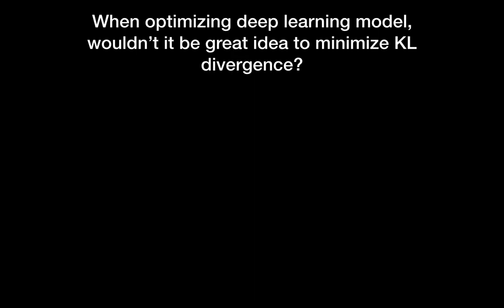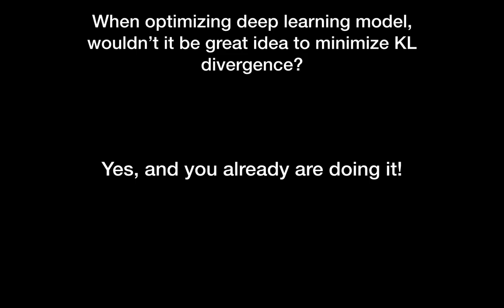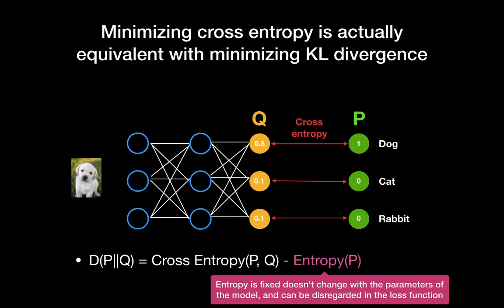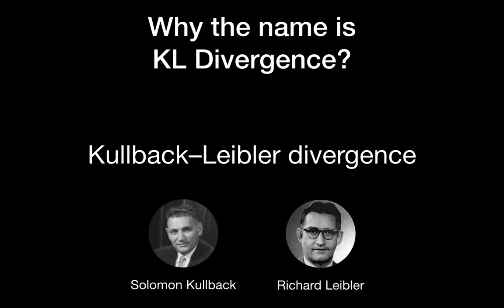As a bonus, if you are familiar with deep learning model training, you know we use cross entropy as the cost function and minimize it during optimization. Why not minimize the KL divergence instead of the cross entropy? Because minimizing KL divergence means maximizing likelihood with the true label. That is a great point — and you are actually already doing that. If we look at the KL divergence equation, it is just cross entropy minus entropy, where the entropy is constant and does not change with the model parameters during training, so it can be disregarded in the loss function. Therefore, minimizing cross entropy is actually the same as minimizing KL divergence.